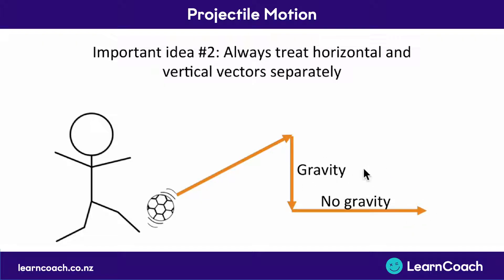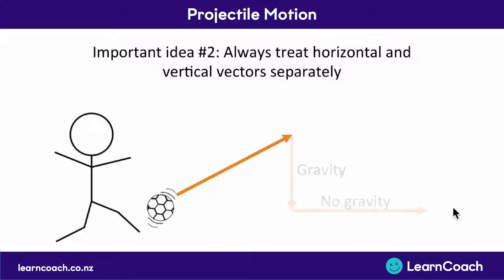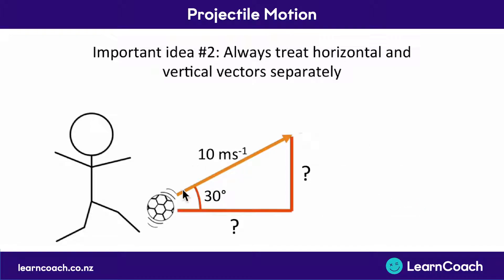Now let's see how we would apply this. We know gravity is the only force acting and we need to treat horizontal and vertical vectors separately. We might be shown that a soccer ball is flying up at 10 meters per second at an angle of 30 degrees, and we need to treat the horizontal component and the vertical component of this 10 meters per second separately.